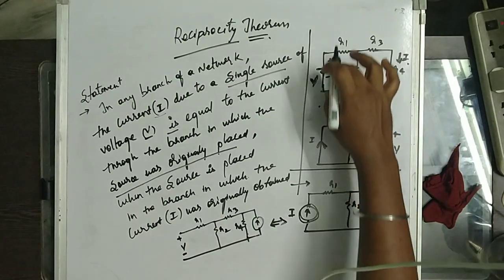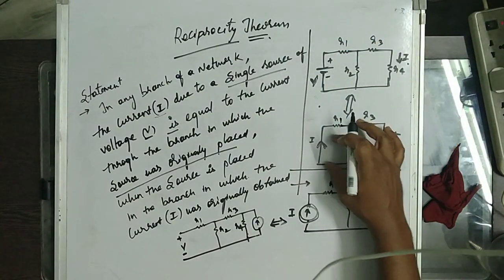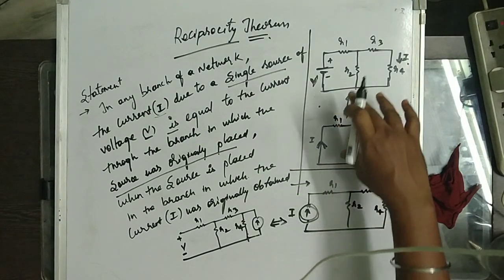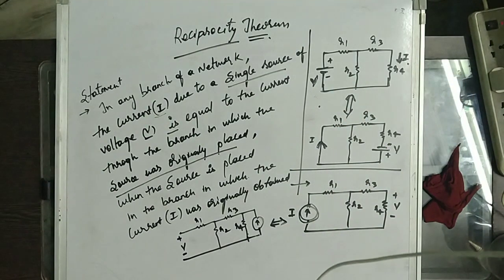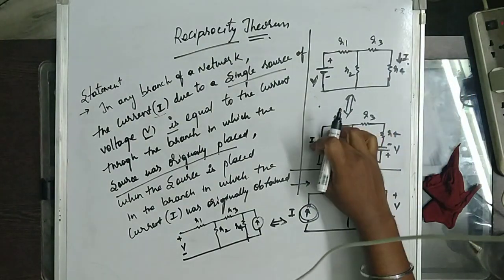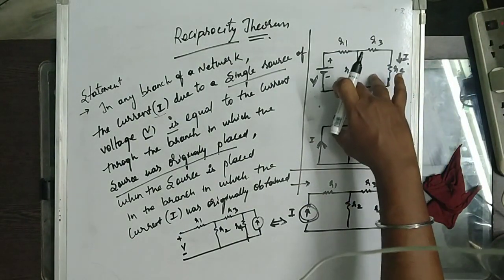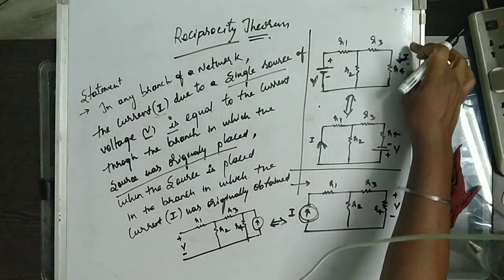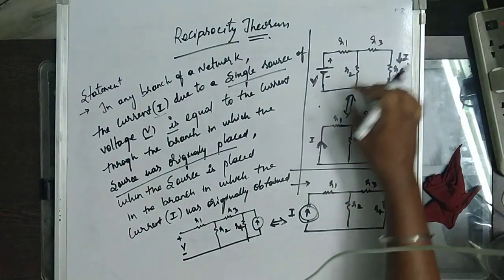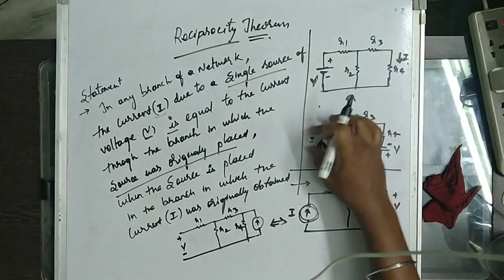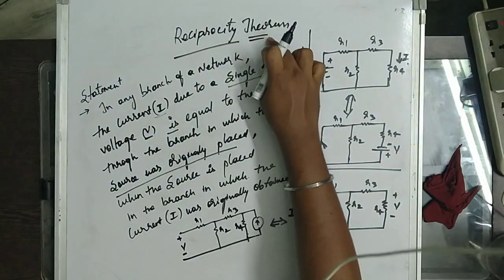Here the input current will be delivered in this direction, so the response also should be in this direction. Both circuits, if we give the values, will get the same response I. That's why the reciprocal theorem will be valid. If we calculate the response for these two circuits, the responses will be equal. If the responses are equal, then only the reciprocity theorem is valid.